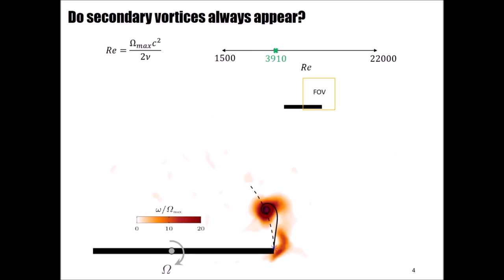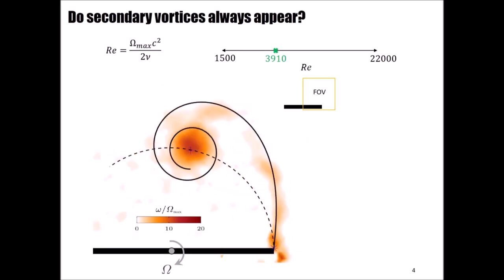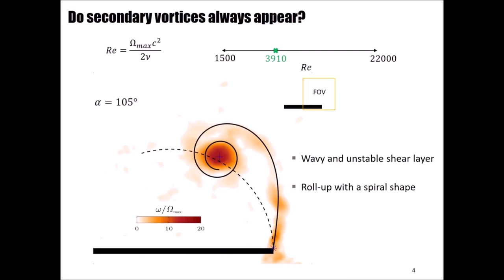If we now increase the Reynolds number to 3910, we can see a similar development to the previous case, but with a slight difference. If we take the same angular position of 105 degrees, this time the shear layer looks wavy and unstable, but it still rolls up with a spiral shape into the primary vortex core.